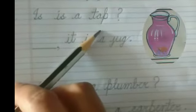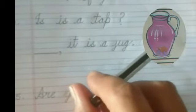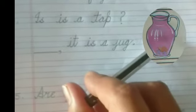Question number four is: Is it a tap? My dear kids, you see carefully. Is it a tap? No, it is a jug.